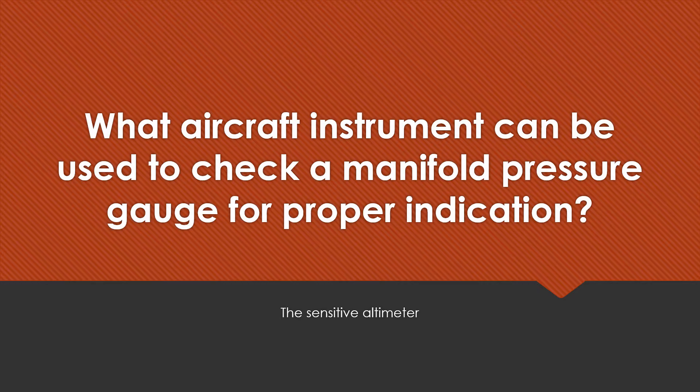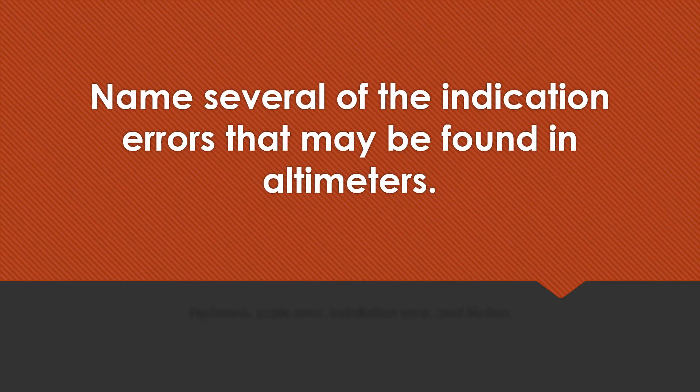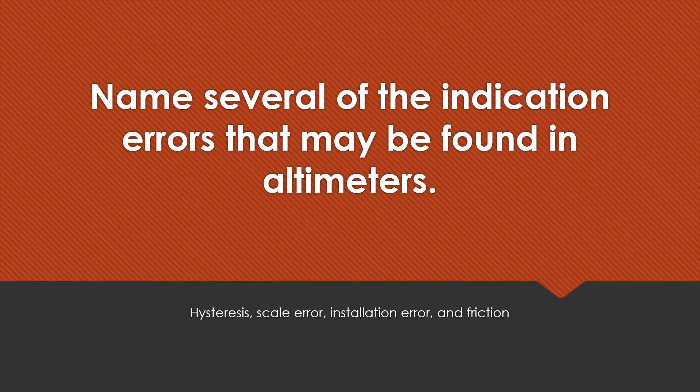The sensitive altimeter. Name several of the indication errors that may be found in altimeters. Hysteresis, scale error, indication error, and friction.